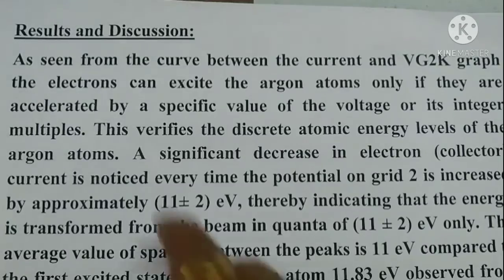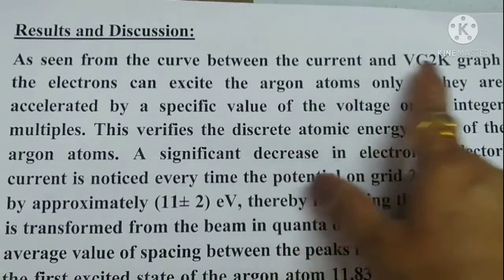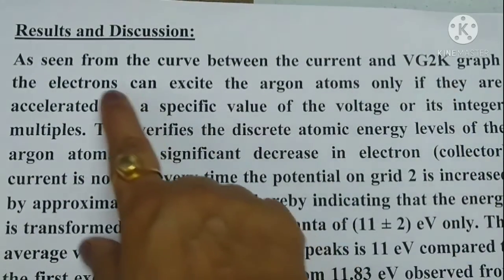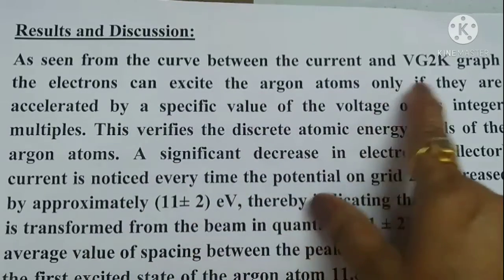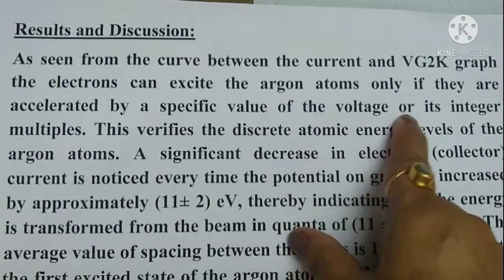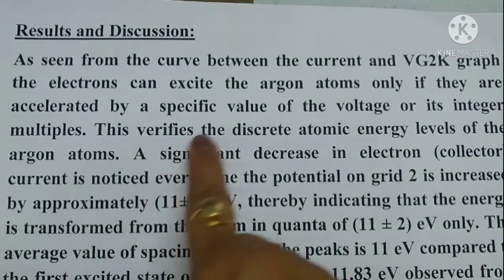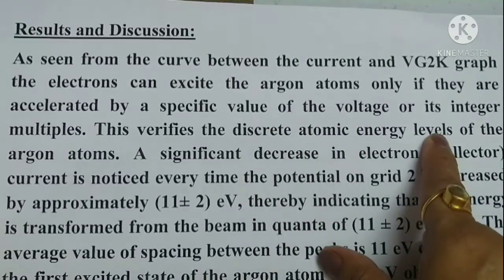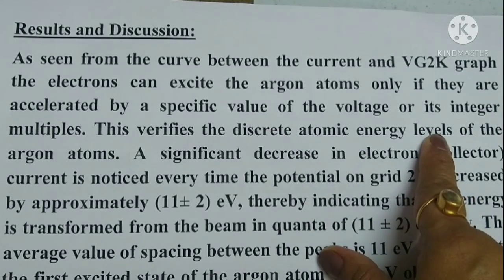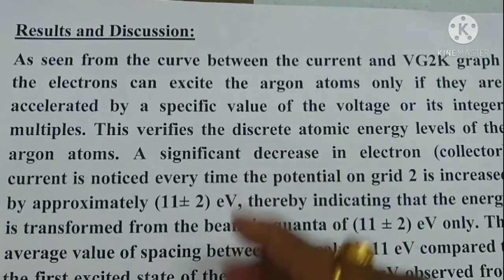As seen from the curve between the current and the accelerating voltage, the electrons can excite the argon atom only if they are accelerated by a specific value of voltage or its integer multiples. This verifies the discrete atomic energy levels of the argon atom. The value of spacing between peaks is around 11 electron volts compared to the first excited state of the argon atom.